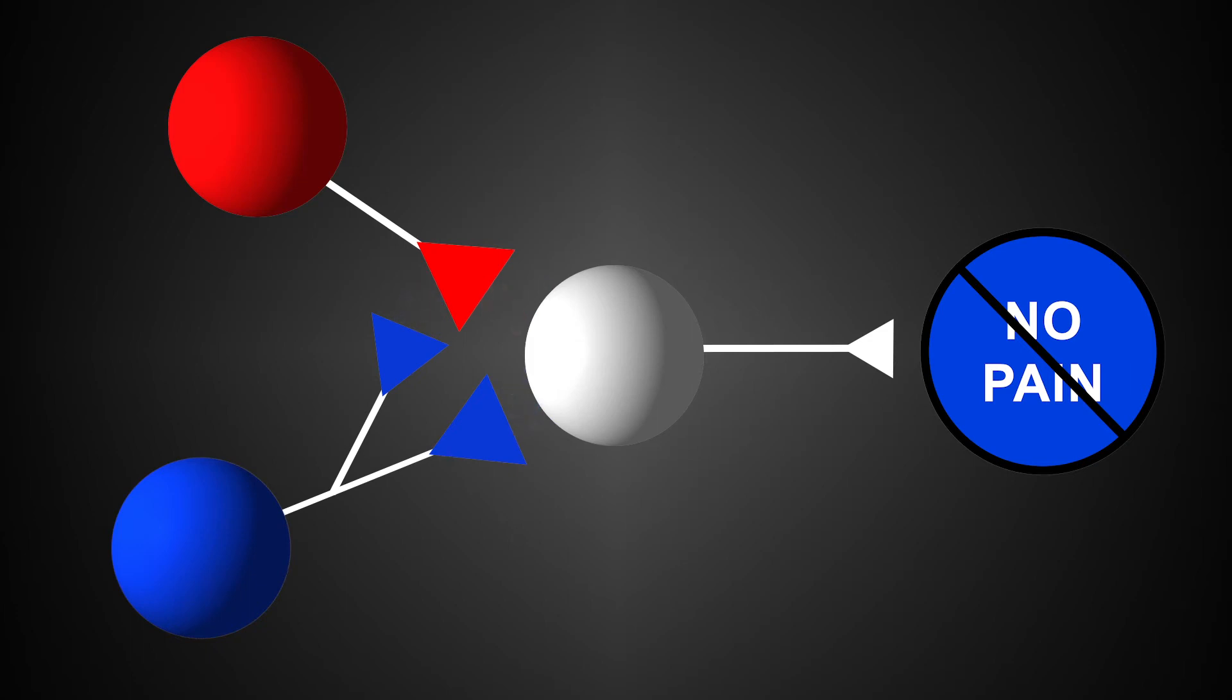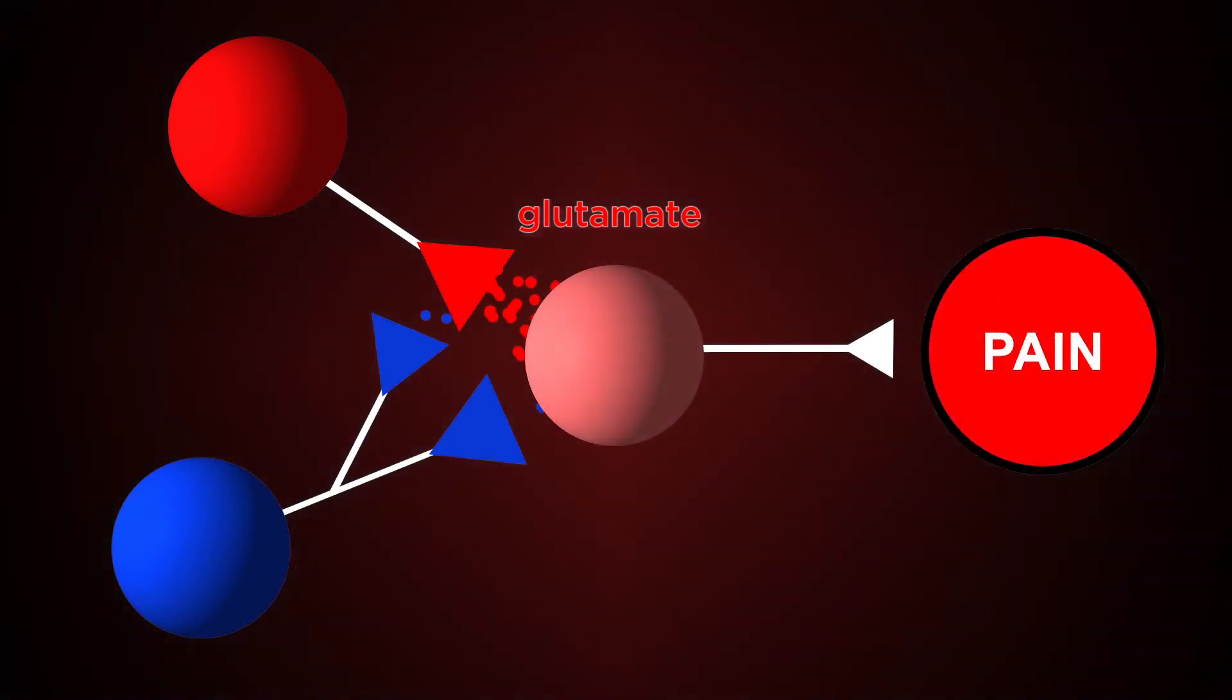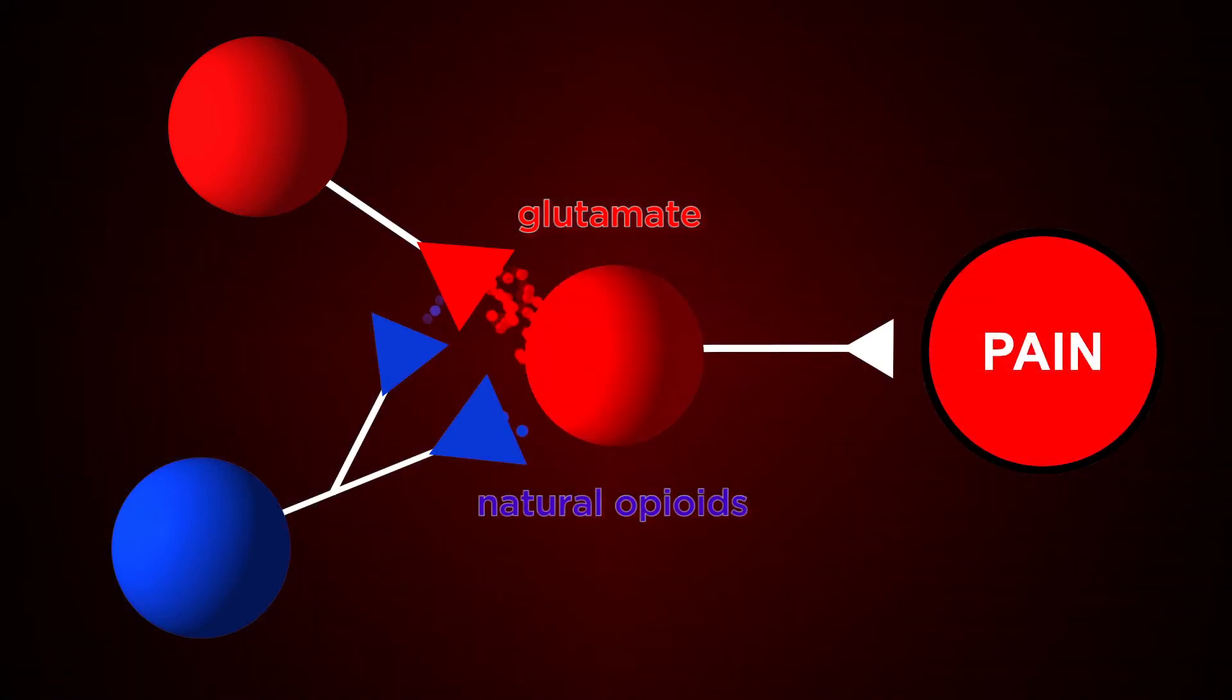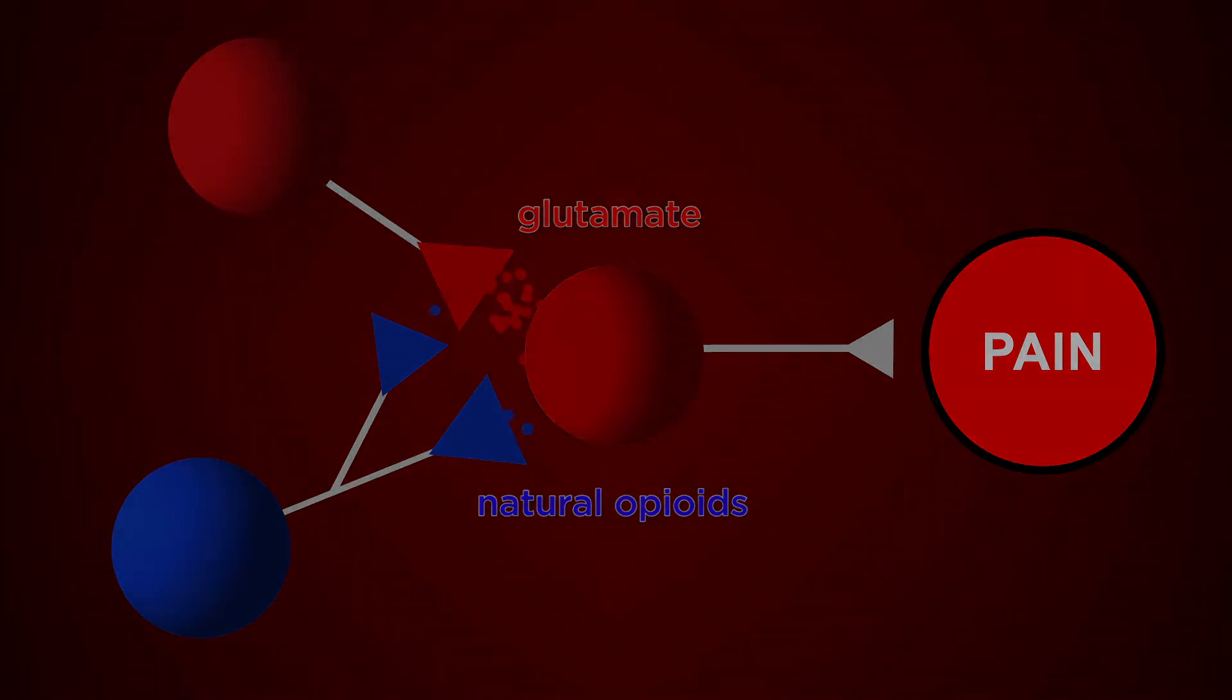When you have chronic pain, your body produces more excitatory chemicals like glutamate that make you feel more pain. At the same time, your body produces less inhibitory chemicals, like natural opioids, to stop pain. Importantly, these changes in the nervous system are moldable and not permanent.